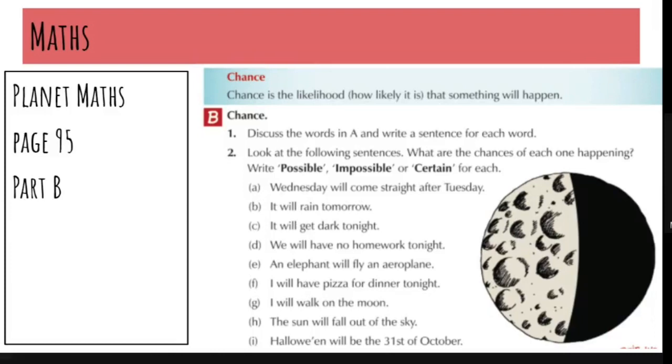All right. So A, Wednesday will come straight after Tuesday. Is that possible, impossible or certain? Wednesday will come straight after Tuesday. Hope you have an answer. So that is certain. Wednesday always comes after Tuesday. So we can say the chances of this happening is certain.